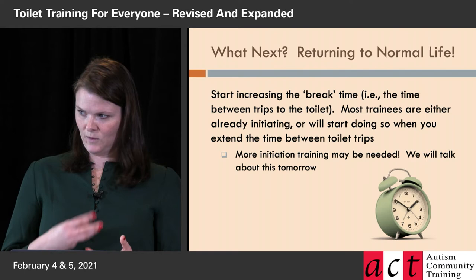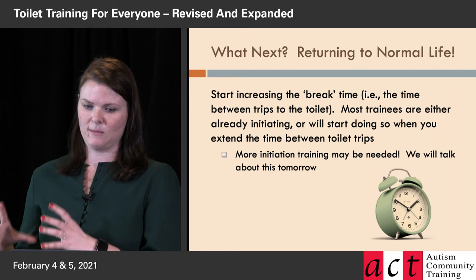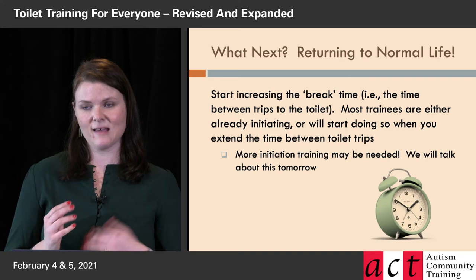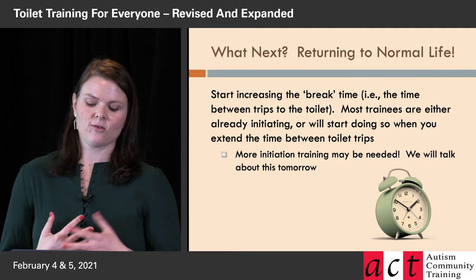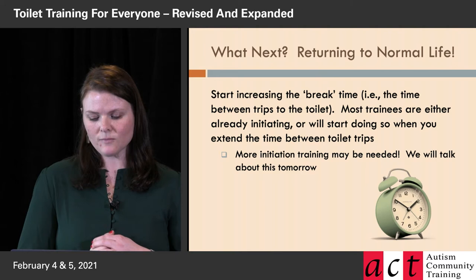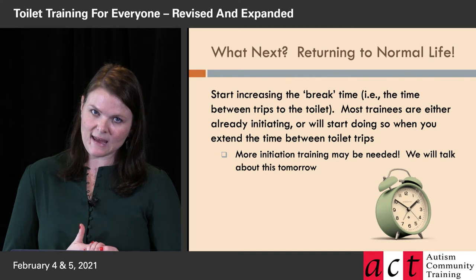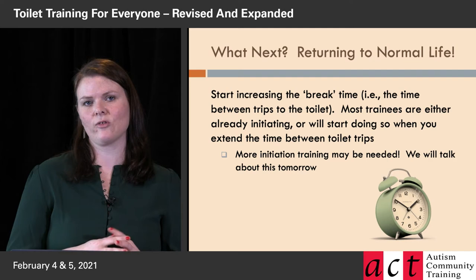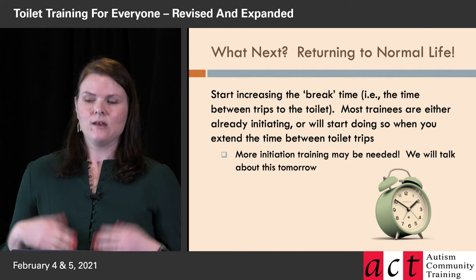So you've finished the procedure and had your three successes in the final phase. You might start going to a 35-minute break, then 40, then 45. You can also start fading out that extra liquid at the same time, approaching more their normal level. For many trainees, that's all it takes to fade out — you're not doing it abruptly, but making it progressively just a tiny bit harder, and you're going to usually see initiation happen in that moment.